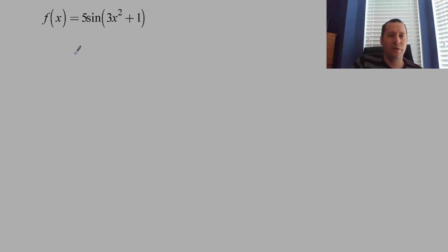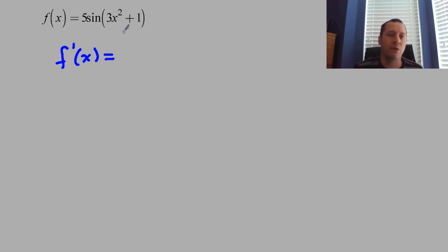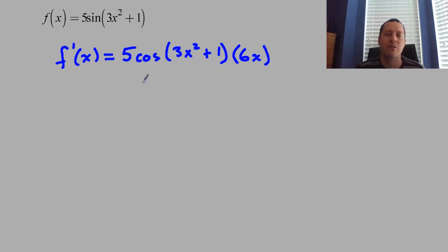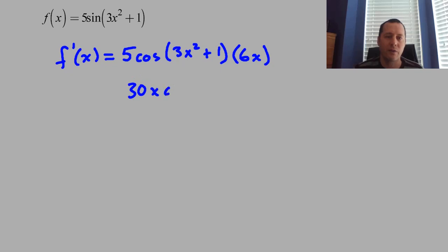Go ahead and pause if you want to write the derivative. Finding the derivative here, you look at the outermost function first, which is the sine function, ignoring the constant multiple—it just hangs around for the ride. The derivative of sine of stuff is cosine of stuff. Keep the inside the same, then multiply by the derivative of the stuff—that's how the chain rule works. The derivative of the inside is 6x, so the derivative of f(x) = 5 sine of 3x² + 1 is 30x cosine of 3x² + 1.